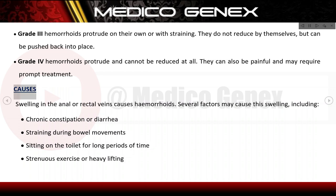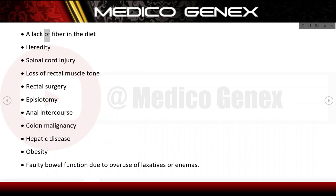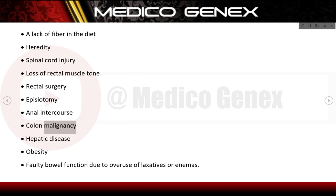Swelling in the anal or rectal veins causes haemorrhoids. Several factors may cause this swelling, including chronic constipation or diarrhea, straining during bowel movements, sitting on the toilet for long periods of time, strenuous exercise or heavy lifting, a lack of fiber in the diet, heredity, spinal cord injury, loss of rectal muscle tone, rectal surgery, episiotomy, anal intercourse, colon malignancy, hepatic disease, obesity, and faulty bowel function due to overuse of laxatives or enemas.